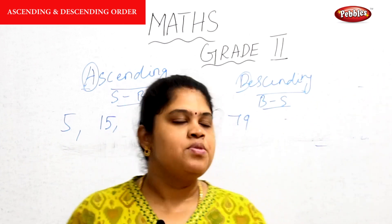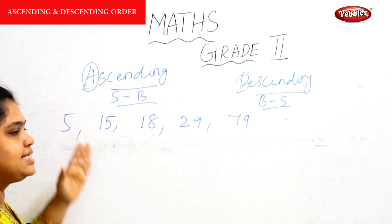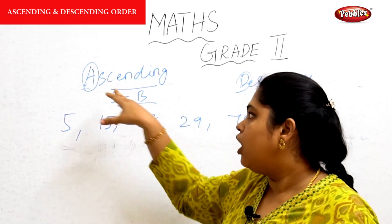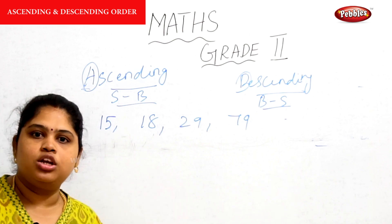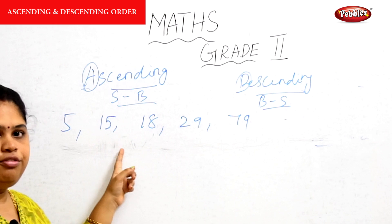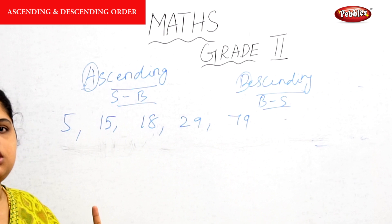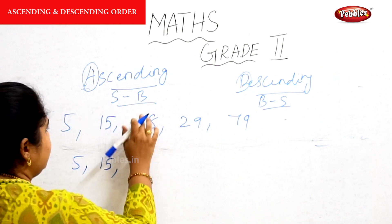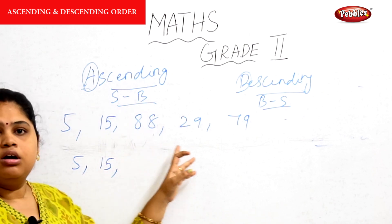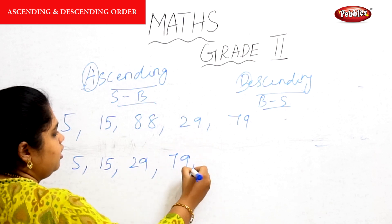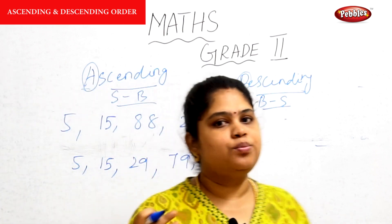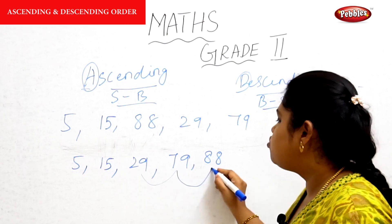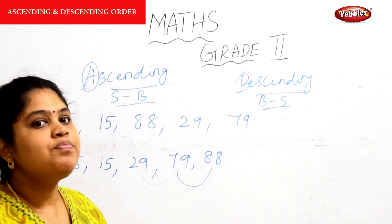Let's rearrange in ascending order. Rearrange means we are going to change the order. Ascending order means small to big. The numbers given are 5, 15, 18, 29, and 79. Which number comes first? 5. Next is 15, then 18, then 29, 79, and 88. See here: 5 is smaller than 15, 15 is smaller than 29, 29 is smaller than 79, and 79 is smaller than 88. This is the procedure to rearrange from small to big.